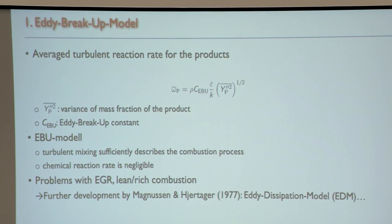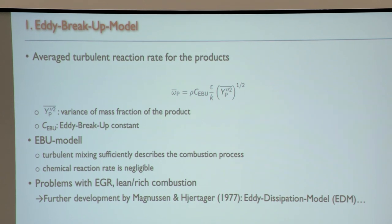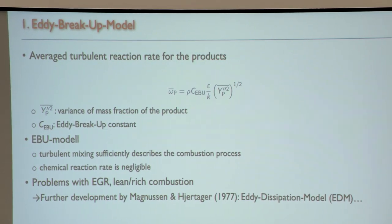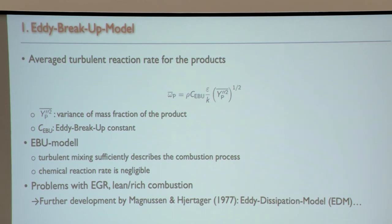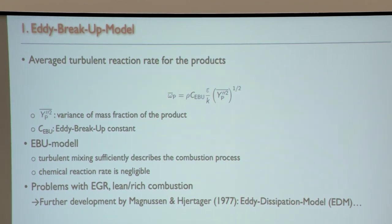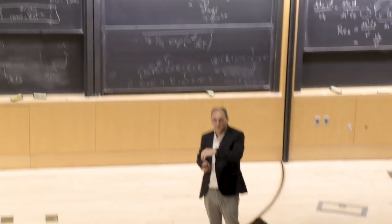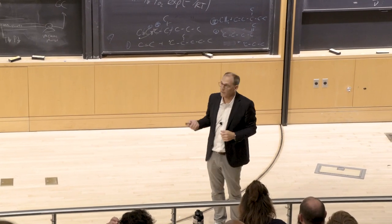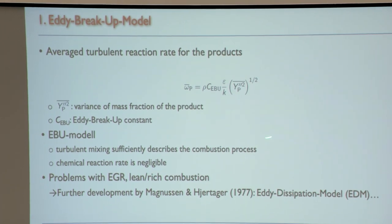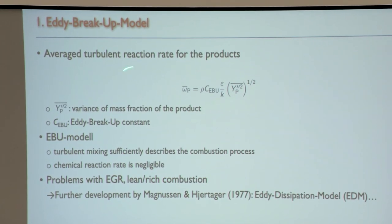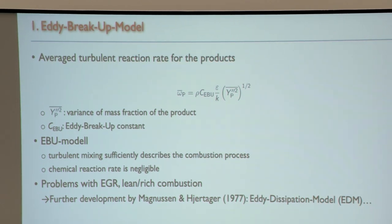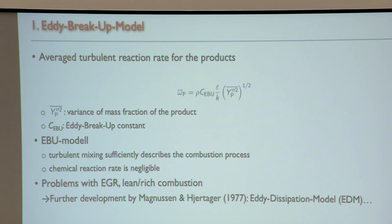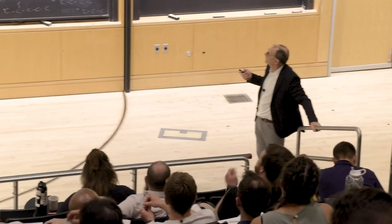An eddy brings hot product into the cold region, which starts the preheating and combustion. This makes the variance of the product non-zero in that region, so the preheating is also captured. People use this model but typically need to adjust the eddy breakup constant to an experiment, then do variations using that constant.